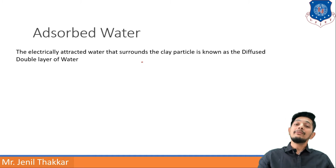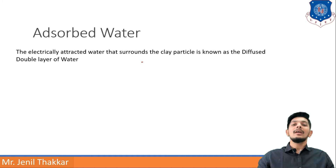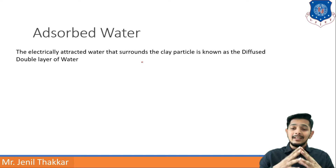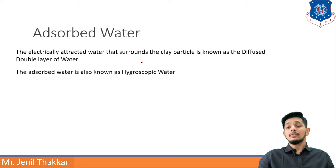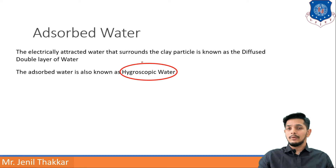The electrically attracted water surrounding the clay particle is also known as the diffused double layer of water. It is again attracted and joined with the positively charged ions. Adsorbed water is also known as hygroscopic water, a term commonly heard in agricultural engineering.